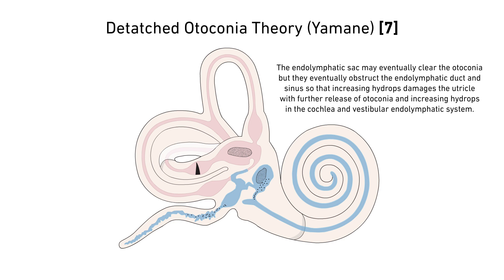Increasing hydrops then damages the utricle with further release of otoconia. The hydrops eventually involves the entire inner ear.